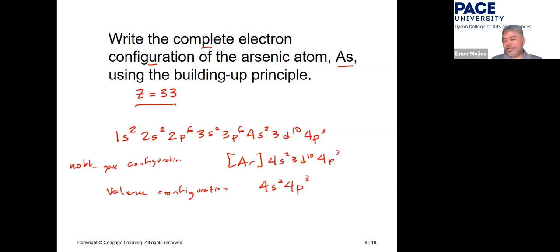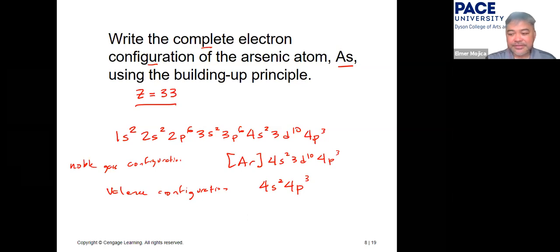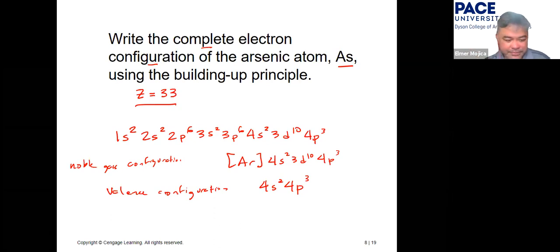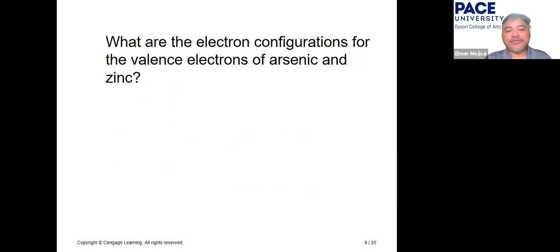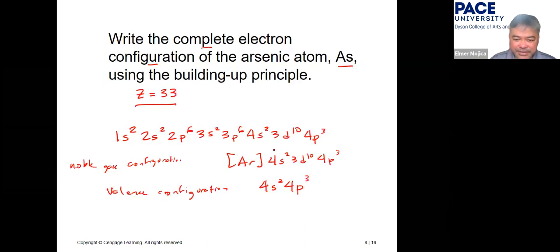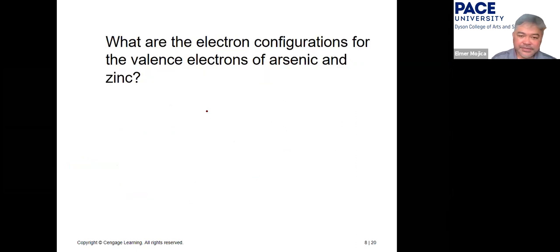Chapters seven and eight are the easier ones — whatever we discuss, you just change the element. Now write the electron configuration and valence configuration of both arsenic and zinc. We already wrote the valence configuration for arsenic as 4s² 4p³.